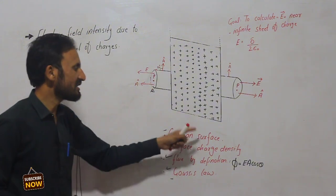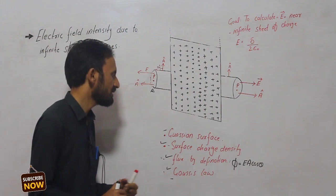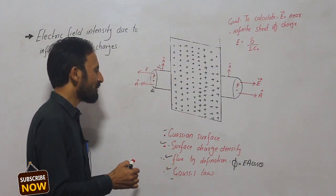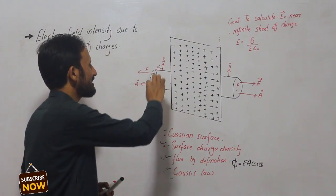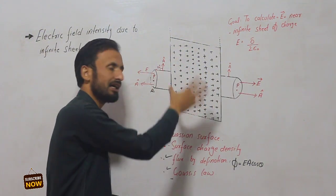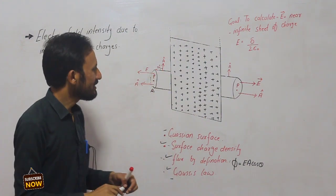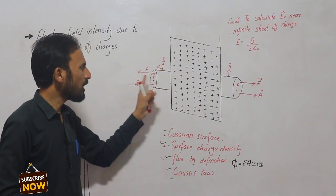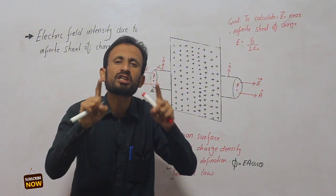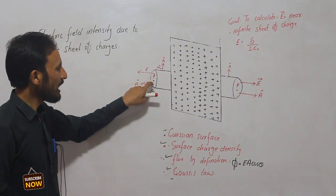To apply Gauss's law, we construct an imaginary Gaussian surface — a cylindrical surface — around the infinite sheet of charge. This cylindrical Gaussian surface is used to find the electric field intensity at the desired point.